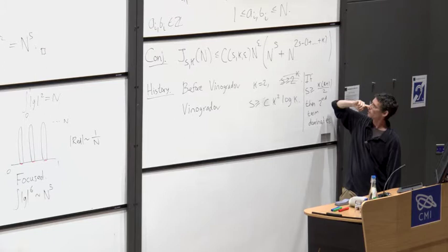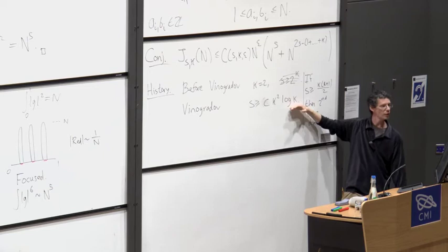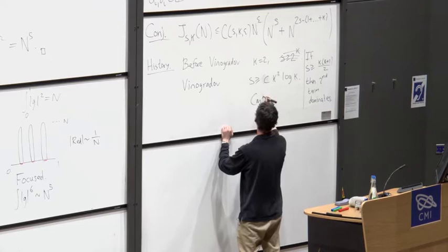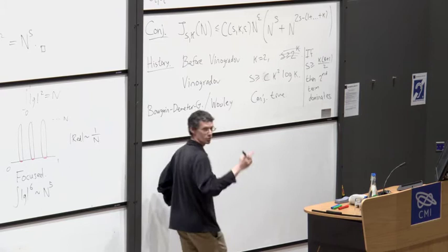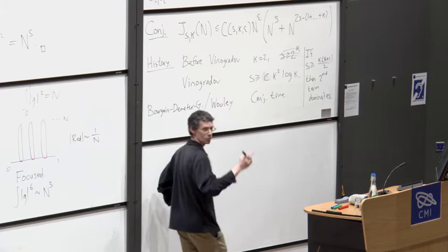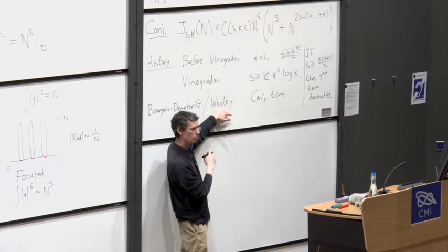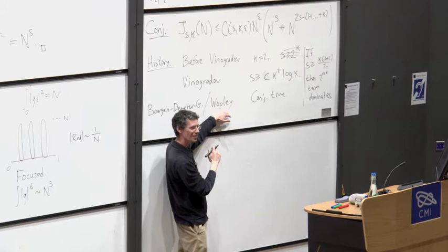The critical value is s = k(k+1)/2, where the second term dominates and the problem is hardest. Vinogradov was able to prove the conjecture for s fairly close to this critical value, whereas earlier techniques required extremely large s. In the last few years, the conjecture has been fully proved — by two groups: Jean Bourgain, Ciprian Demeter, and myself using decoupling; and Trevor Woolley using an approach more in the framework of Vinogradov's original method.